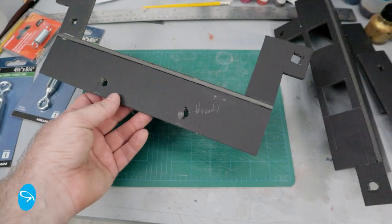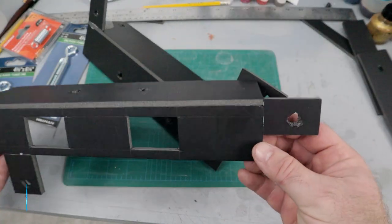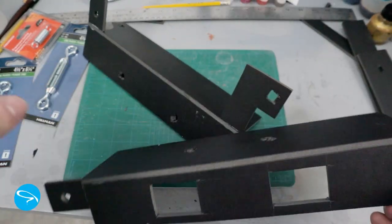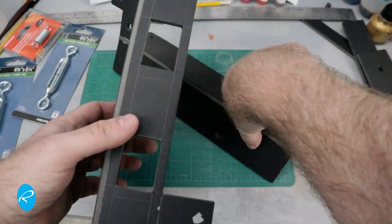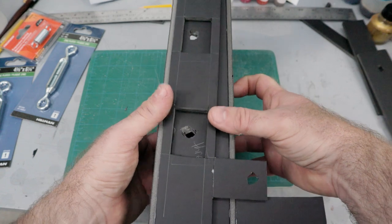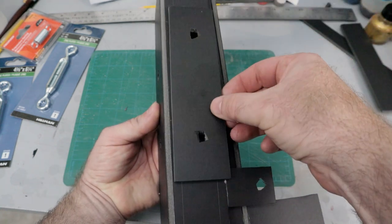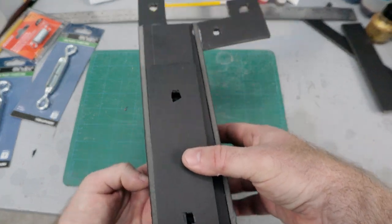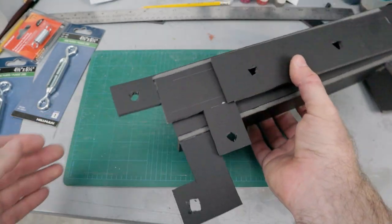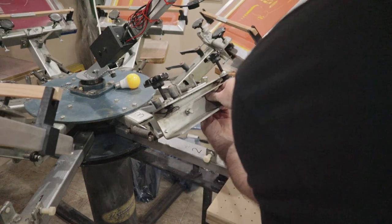I built the proof of concept out of foam core, just to see how the parts would go together. This lets me think through the design better and make changes much quicker than working directly in steel. There's three major pieces here. The adjustable piece that holds the screen is sandwiched between two other pieces. That's where the adjustability comes from. The whole thing is designed to sit between the existing frame mount and the press arm, allowing me to adjust the final position of the screen.